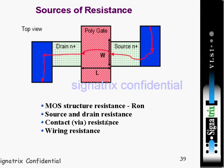Contact via resistance, whether we're going with contact or via, will also offer resistance. Then wiring resistance. These are the four sources of resistance available because of the MOS structure. We'll see one by one what all things are those.